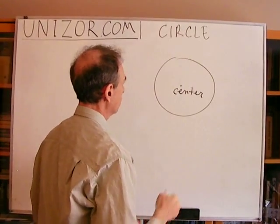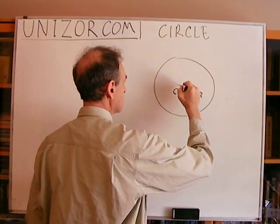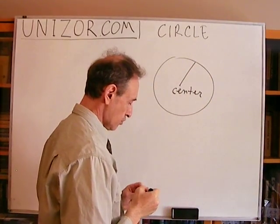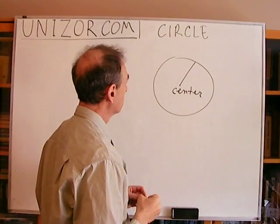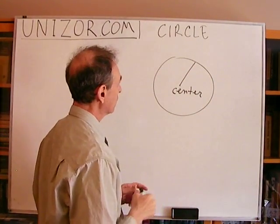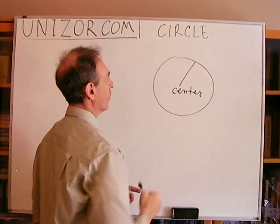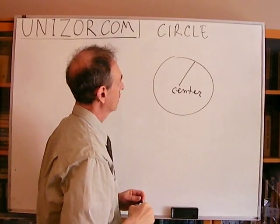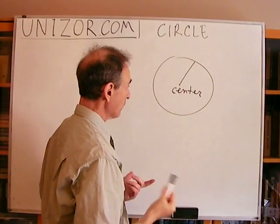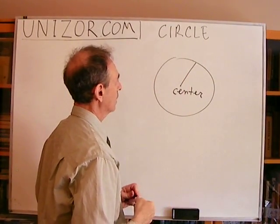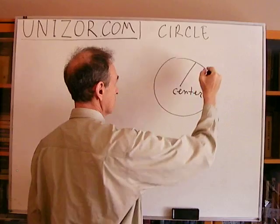Any segment which is drawn from the center to one of the points on that curve, which is called the circle, is called a radius.